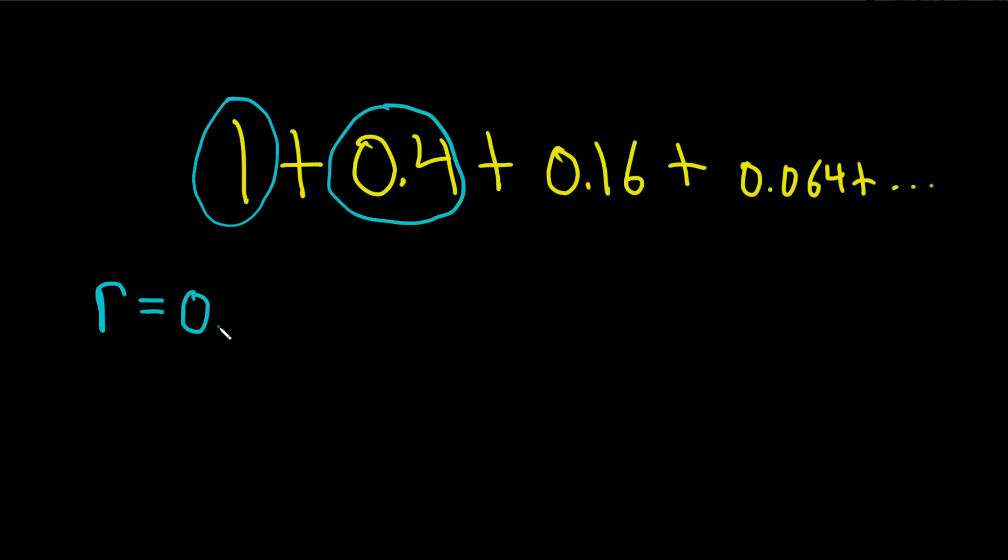Well, 0.4. And then what do you multiply by this in order to get this? Well, 0.4. So r is called the common ratio. We can use this number to get the next term always. This is called the common ratio.